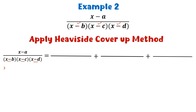We apply the Heaviside cover-up method: we place the first factor x minus b equal to 0 and get x equal to b. Now we replace the value of x by b, but not in the factor from where we have obtained it — that is, x minus b will not be substituted with x equal to b.